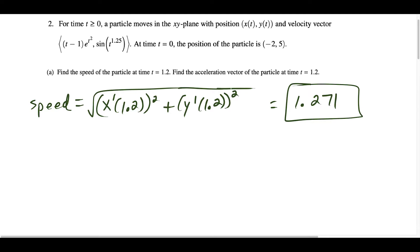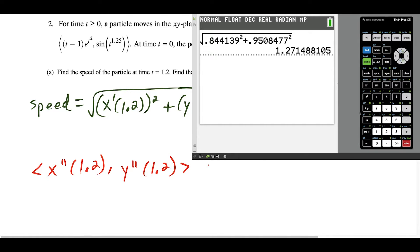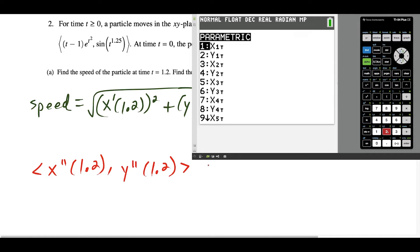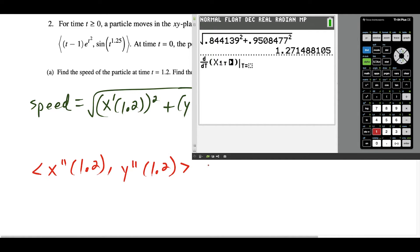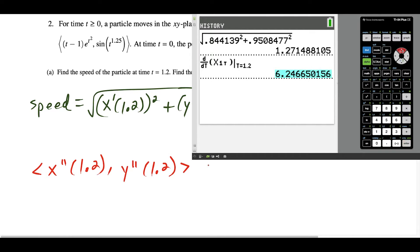The next part asks us to find the acceleration vector of the particle at time t equals 1.2. That's the same as finding x double prime of 1.2 comma y double prime of 1.2. This is all calculator work. We press math 8 to pull up the derivative, taking the derivative with respect to time of the x and y components. We press vars, go right to parametric, and type in x1 — that's the velocity in x — so its derivative gives us the acceleration in x at t equals 1.2.